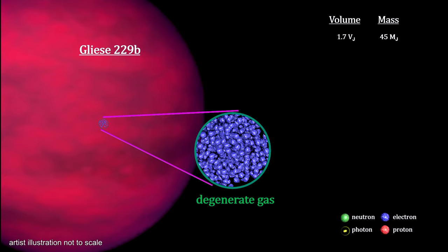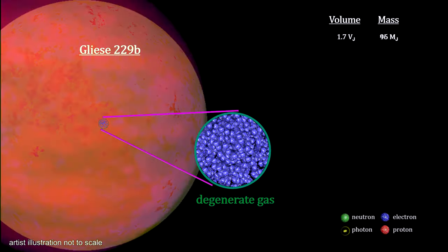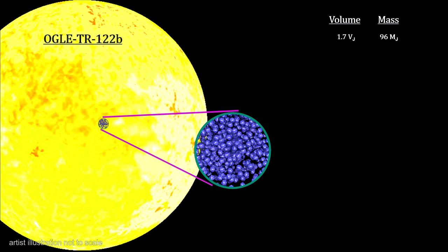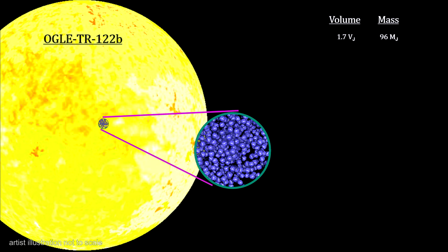To get a star, we simply have to add more mass. Here's OGLE TR-122b. It's one of the smallest known stars.